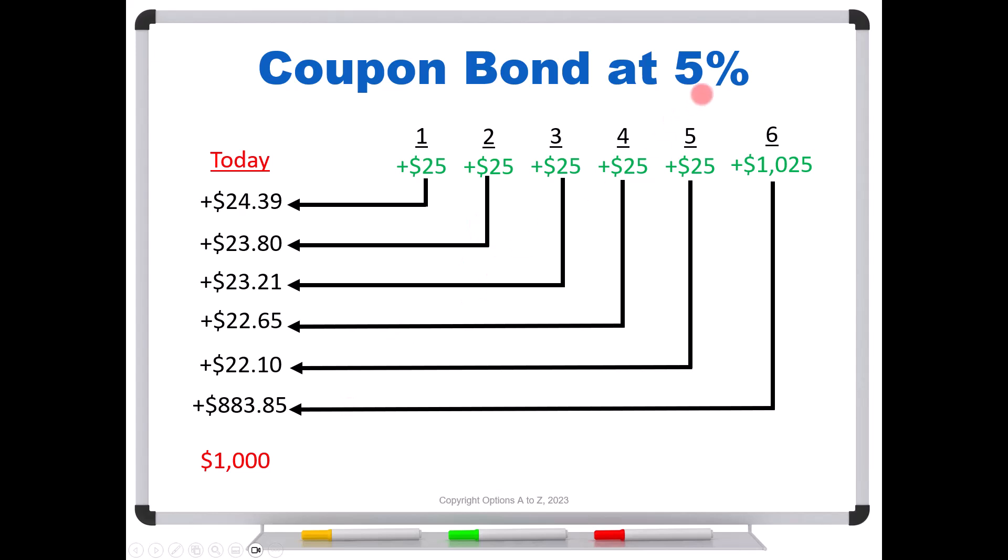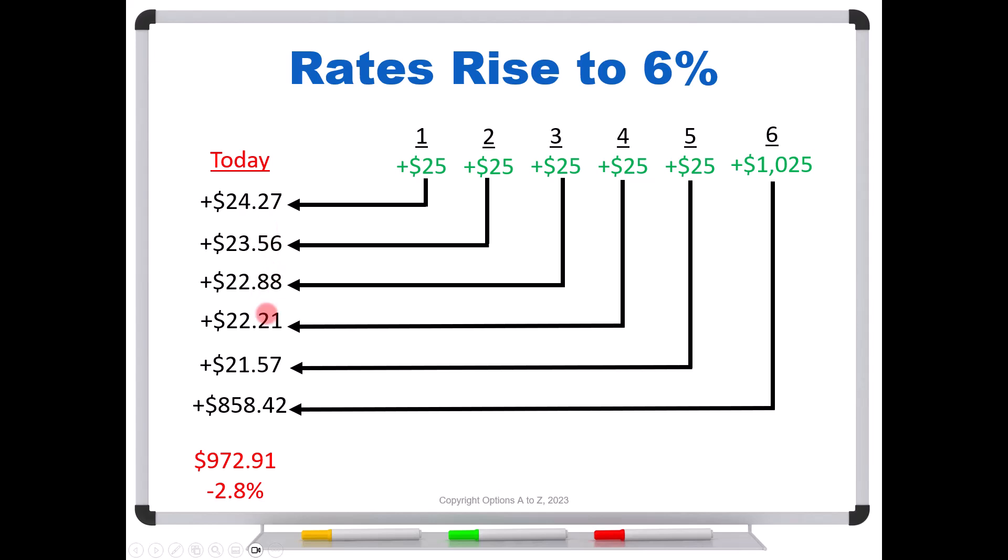But now let's say that rates rise to 6%. All of these cash flows now, watch what happens: their values drop. So the bond is now worth $972.91 or down about 2.8%. That's not really a huge risk considering that rates have risen from 5% to 6%. The reason that they're not as sensitive, these coupon bonds, to changes in interest rates is because of these cash flows that are the interim cash flows. They're cash flows you're getting prior to maturity, and they tend to dampen this effect. With a zero-coupon bond, all of your cash flows are sitting way out into the future, so they get the biggest magnification effect when taking the present values. But because we get these coupon payments along the way, these coupon bonds are not as sensitive to changes in interest rates.